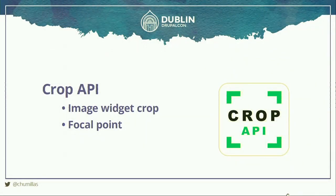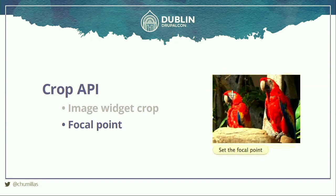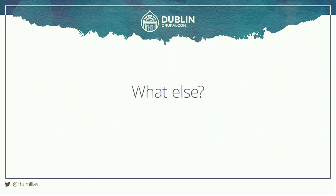On Drupal 8 we also have the Crop API. The Image Widget Crop module lets the user choose exactly what part of the image to use for each image style. Focal Point is even easier — the user only chooses the most important part of the image, and it automatically crops. It's super easy to implement: instead of 'scale and crop' you just choose 'scale and crop focal point' — that's the only difference.